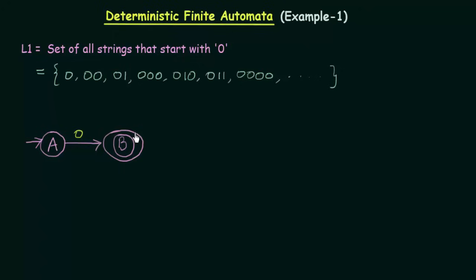Now I am in state B. After reaching state B, I can still get inputs 0 or 1. Since B is the final state, I give it a self-loop for both 0 and 1. This means after reaching final state B, whatever input you get — whether 0 or 1 — it stays in B itself. The string started with 0, and our only condition is that it starts with 0, so it stays in the final state and is accepted.